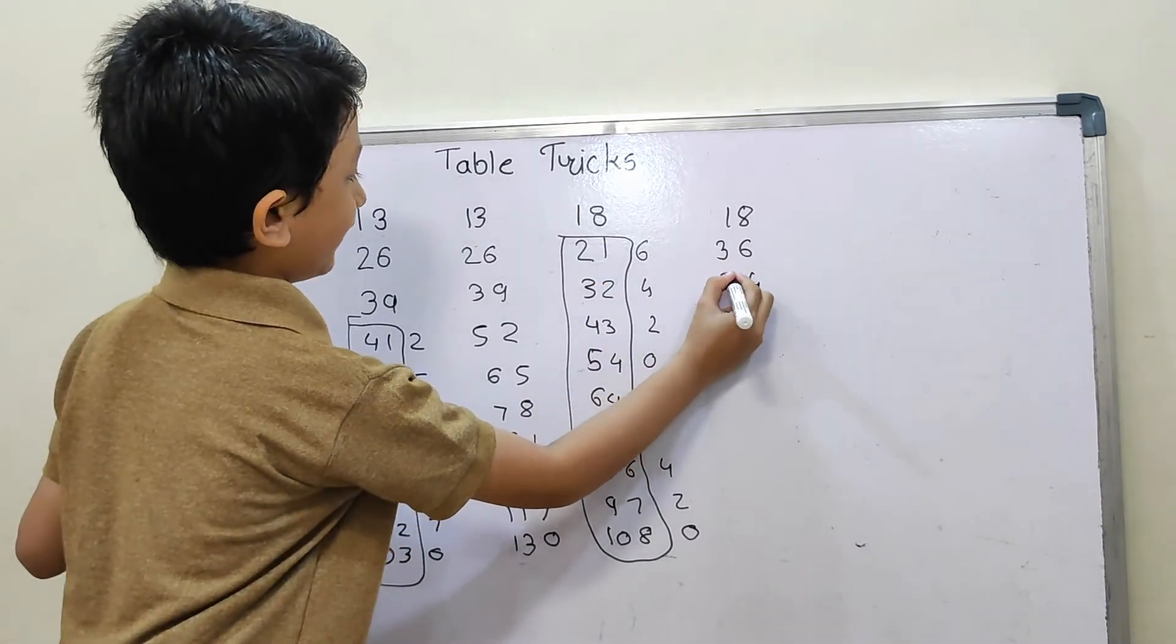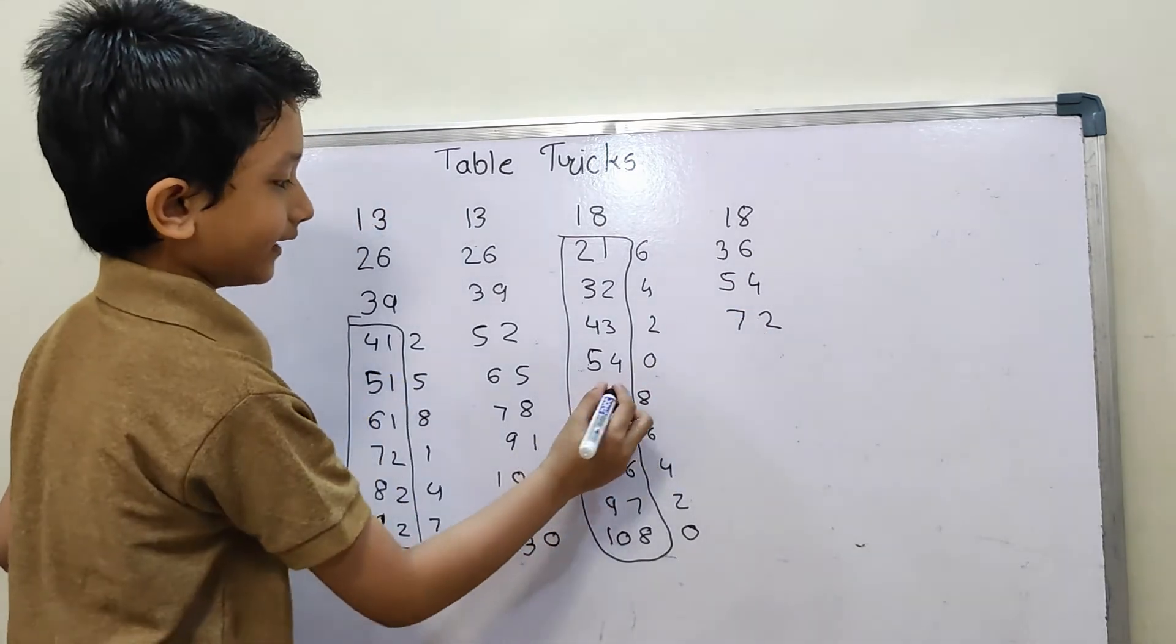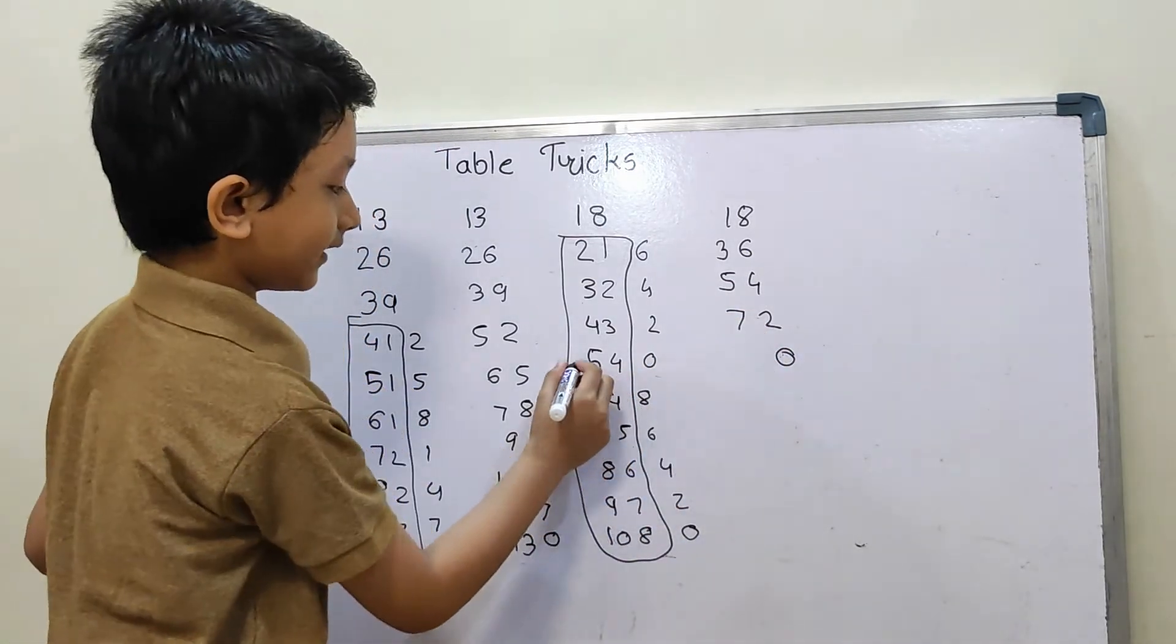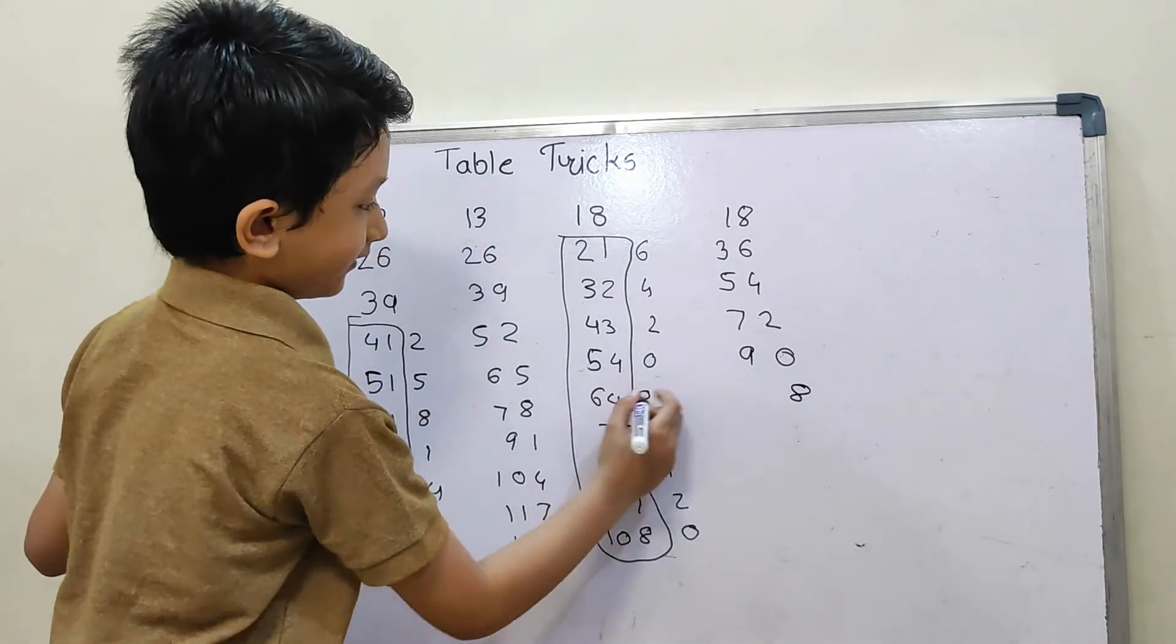3 plus 2 equals 5, and then we have 2 as it is. 4 plus 3 equals 7, and then we have 0 as it is, and then 5 plus 4 equals 9, and then we have 8 as it is, 6 plus 4 equals 10.